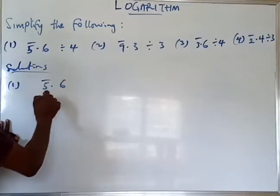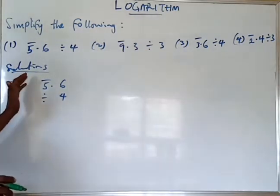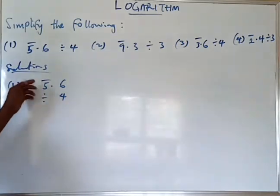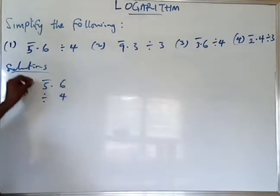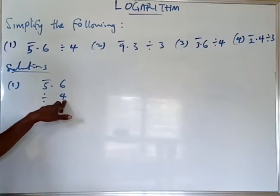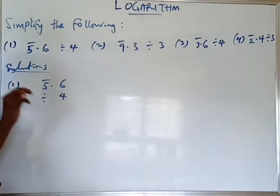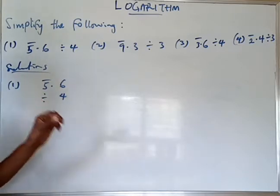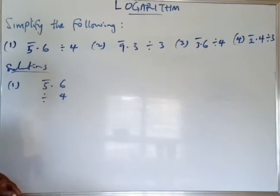We have bar 5.6 divided by 4. Some protocol has to be observed here. Whenever division of a negative number is to be carried out, we must ensure that the number carrying the bar as well as the divisor must be divisible — that is, such a division has to be carried out in such a way that no remainder is allowed, or only a remainder of zero is allowed. So by the time we say 5 divided by 4, it gives a remainder.